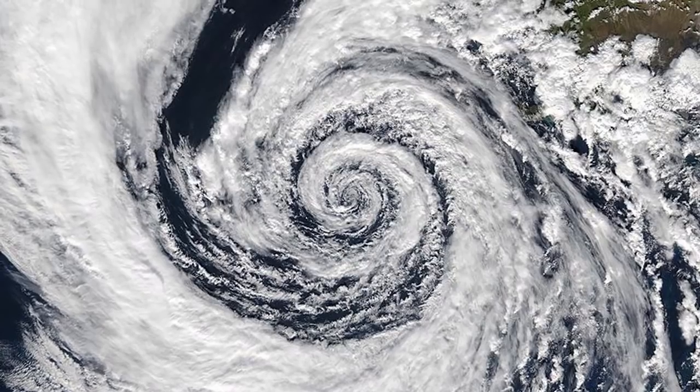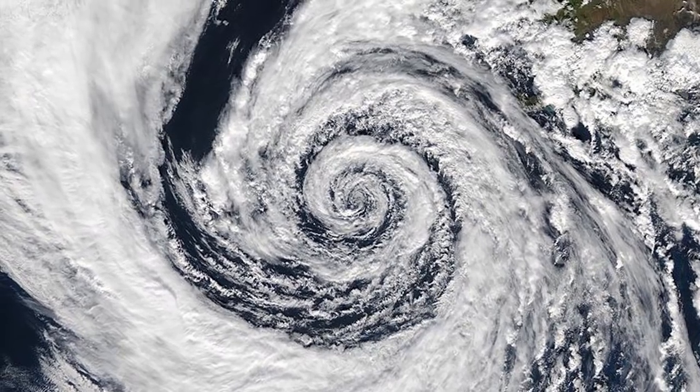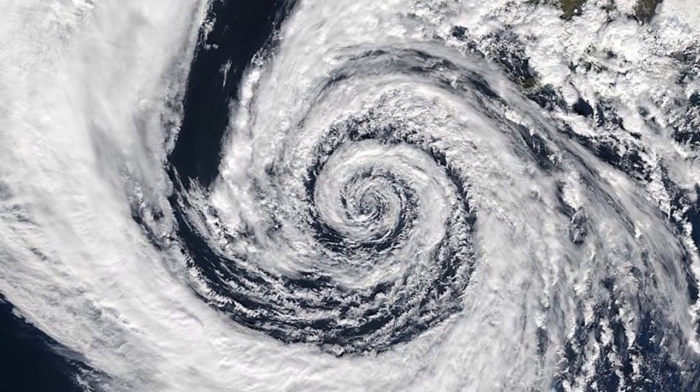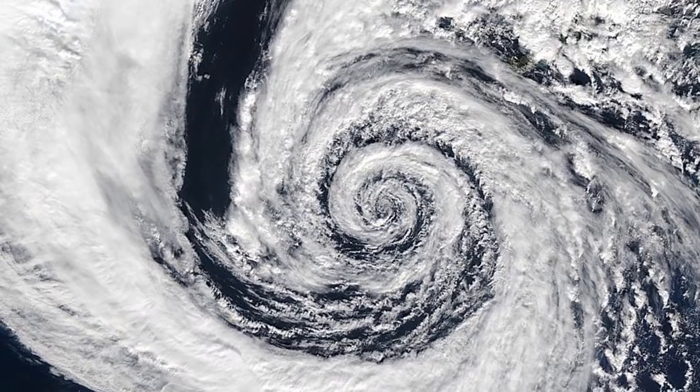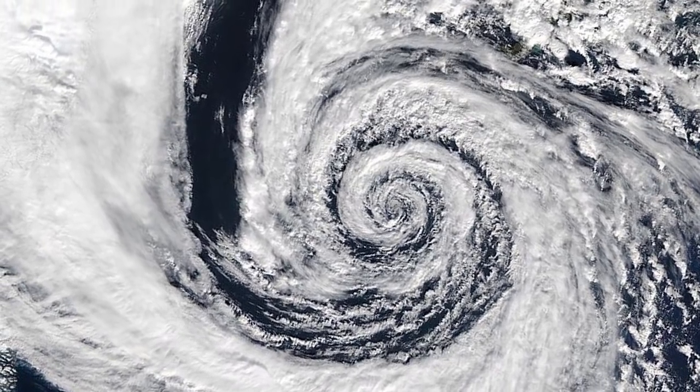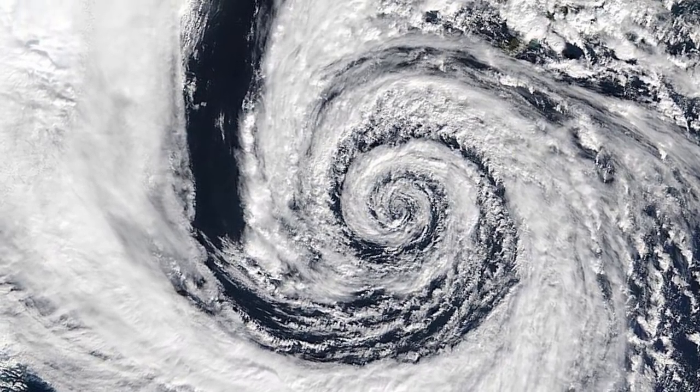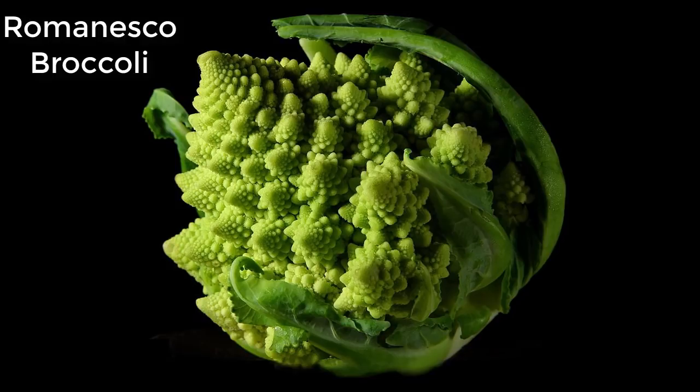Now take a look at this figure. This is an extra tropical cyclone over Iceland and it approximately resembles a logarithmic spiral pattern. This is broccoli, not the usual one but a Romanesque broccoli. This grows in a logarithmic spiral pattern.